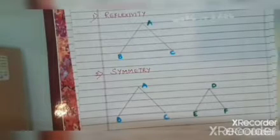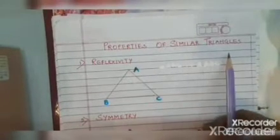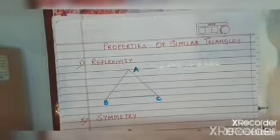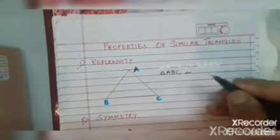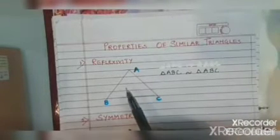After this, we will study the properties of similar triangles. You have studied the properties of congruent triangles in 9th standard — reflexivity, symmetry, and transitivity. The first property is reflexivity, which means a given triangle is similar to its own self. So triangle ABC is similar to triangle ABC.